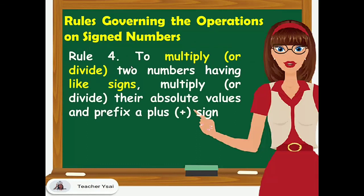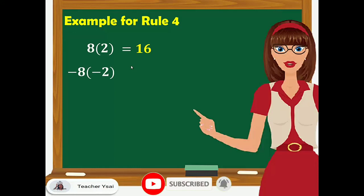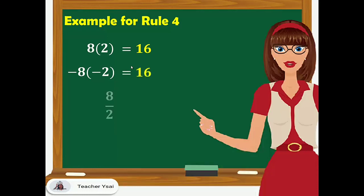Rule number 4: to multiply or divide two numbers having like signs, multiply or divide their absolute values and prefix a plus sign. For example, 8 times 2 is 16. Negative 8 times negative 2 — since they have like signs, the answer is positive 16. 8 divided by 2 equals 4. Negative 20 divided by negative 4 — since they have the same sign, our answer is 5.